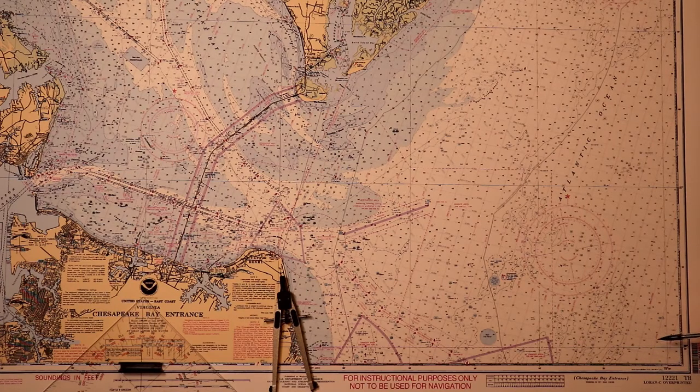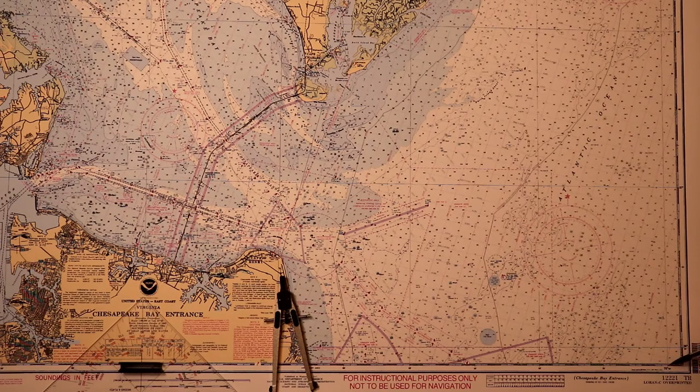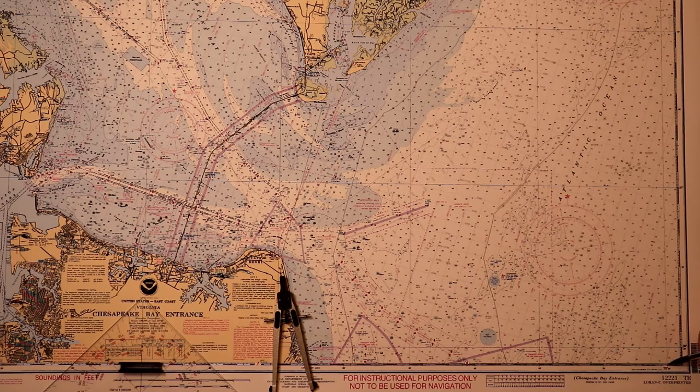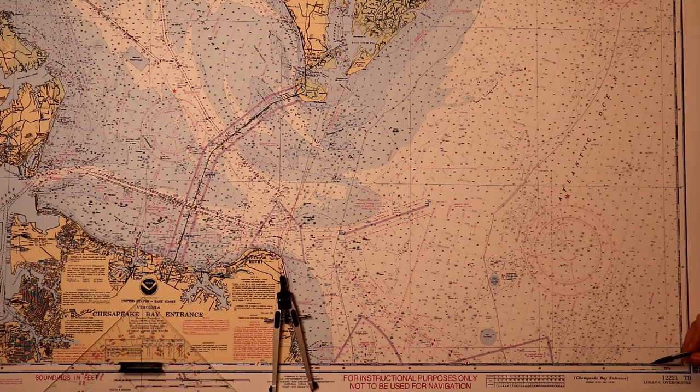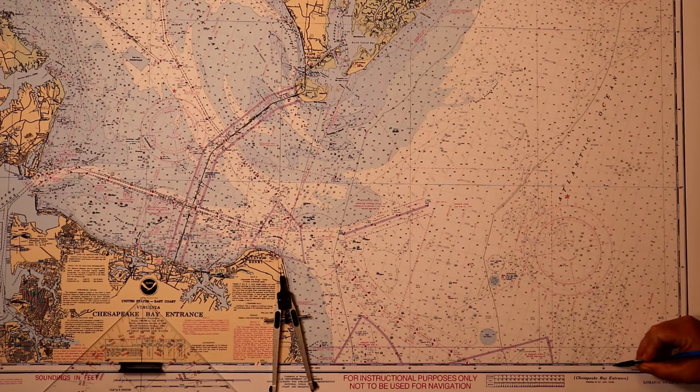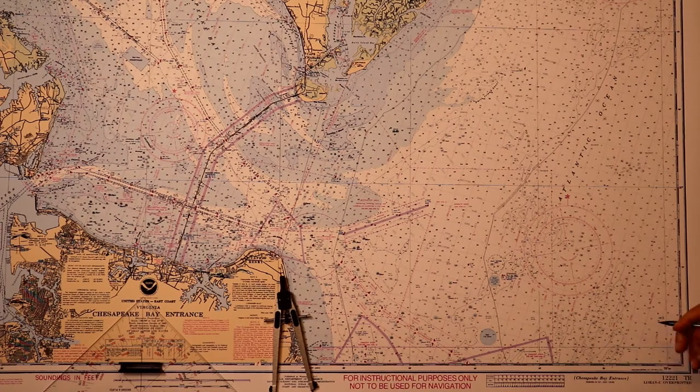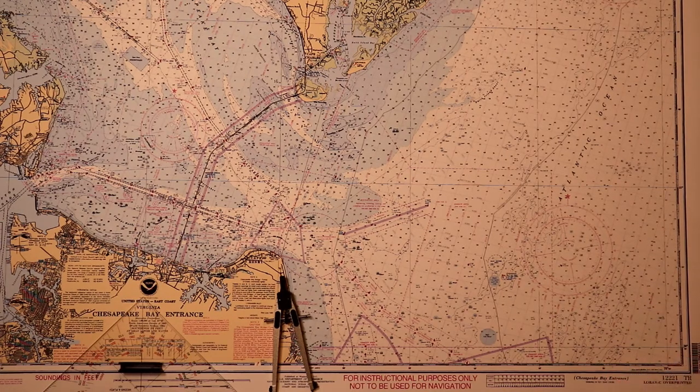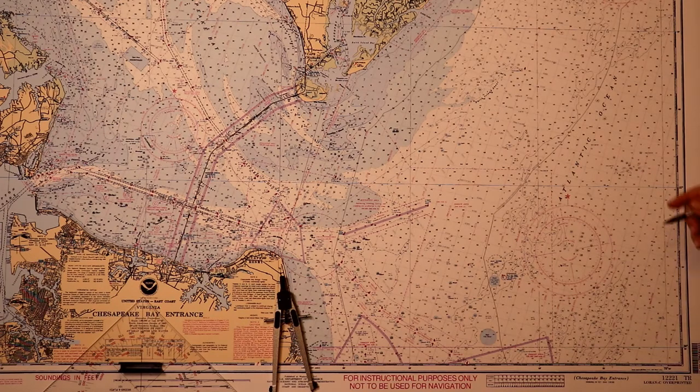Now we look at the bottom, and let's just say our longitude is 75 degrees 34.3. So right here is 75 degrees 30. Here's 31, 32, 33, 34.3 is right there. So now we have our latitude and our longitude. Now we have to connect them to get our navigational fix.